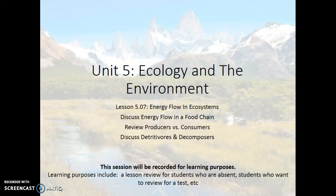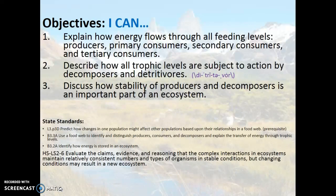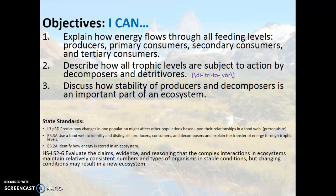Today, this is Lesson 7 of Unit 5. We're looking at how energy flows through the different trophic levels, and we're going to introduce decomposers and detritivores, along with looking at the stability that producers and decomposers provide to an ecosystem.